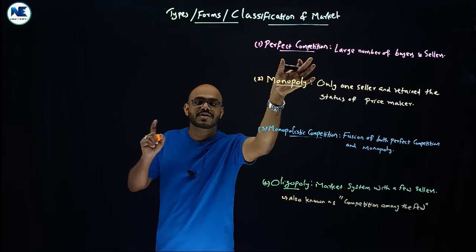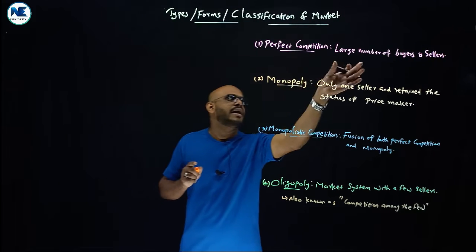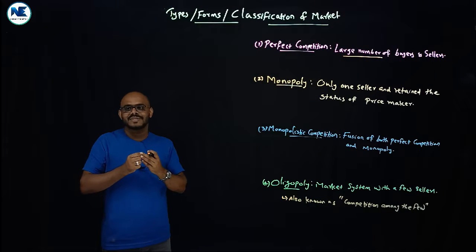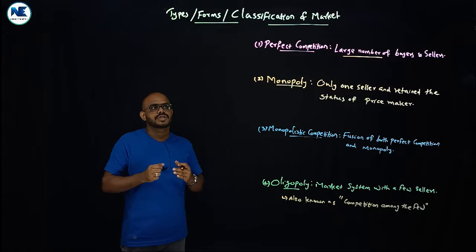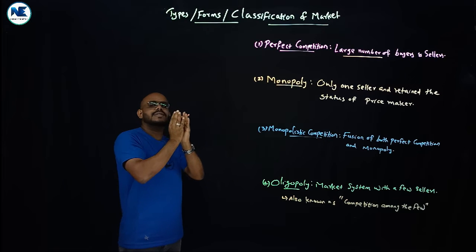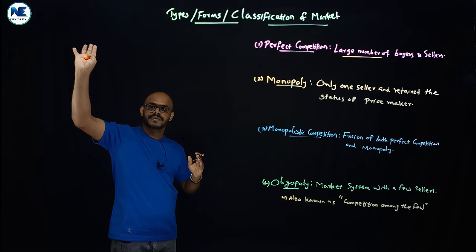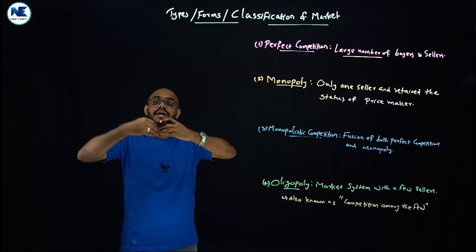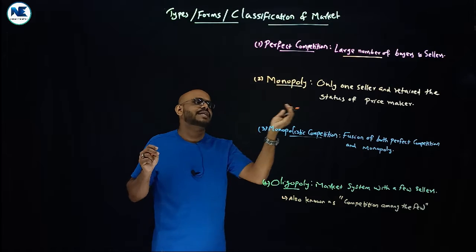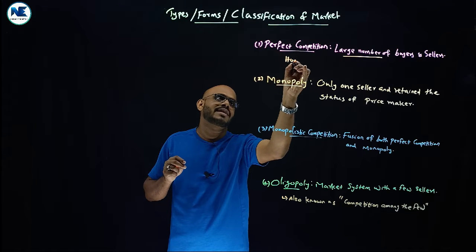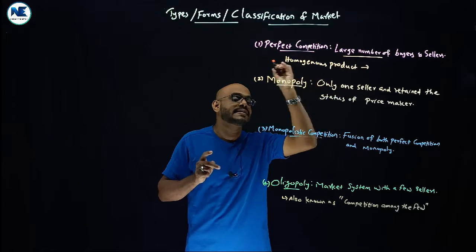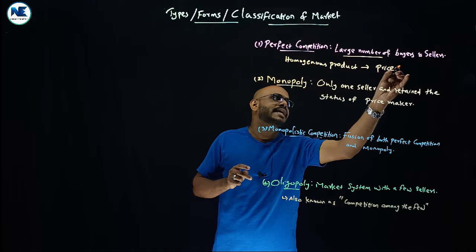Perfect competition is a market structure characterized by a large number of buyers and sellers. This is the key term: large number of buyers and sellers. There are also a large number of firms in the market. These buyers and sellers are actually producing homogeneous products — that is, identical or similar products.